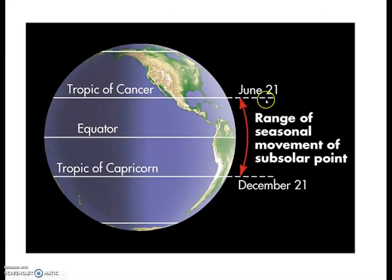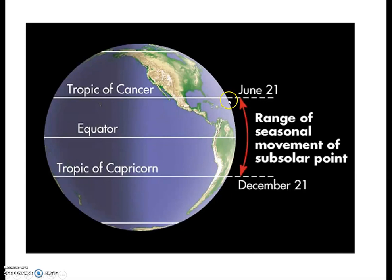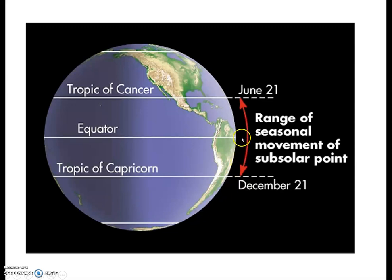On June 21st, the vertical rays of the noon Sun hit at the Tropic of Cancer — the subsolar point is at 23 and a half degrees north. Then going through June, July, August into September, at the September equinox the vertical rays strike the equator. Then through October, November into December, the vertical rays hit the Tropic of Capricorn on December 21st. Then through January, February, March, back at the March equinox you're at the equator, and through April, May, June you're back up at the Tropic of Cancer. The vertical rays of the noon Sun range only between 23 and a half degrees north and 23 and a half degrees south.